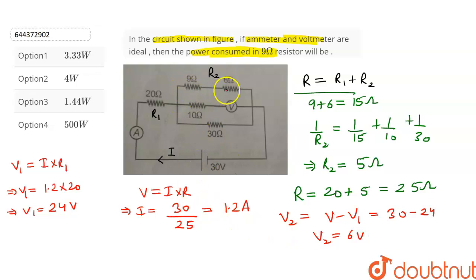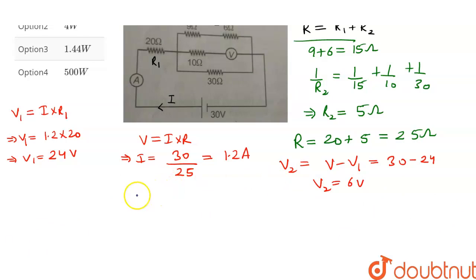All these resistors are connected in parallel so voltage across each of them will be same. We have to find the power consumed in the 9 ohm resistor. And we know that power consumed P is equal to V square upon R. The voltage in that resistor will be 6 volts which is V2 and the resistance is 9 ohms.